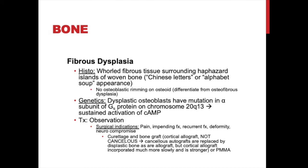On histology you'll see whorled fibrous tissue surrounding haphazard islands of woven bone, often referred to as Chinese letter or alphabet soup. There is no osteoblastic rimming on the osteoid, which differentiates fibrous dysplasia from osteofibrous dysplasia. Genetically, even in sporadic cases, there is usually a mutation in the dysplastic osteoblast in the GS-alpha protein on chromosome 20 that leads to sustained activation of cyclic AMP. In polyostotic disease it is usually a somatic mutation; in sporadic monostotic disease it is usually one cell that went wrong.